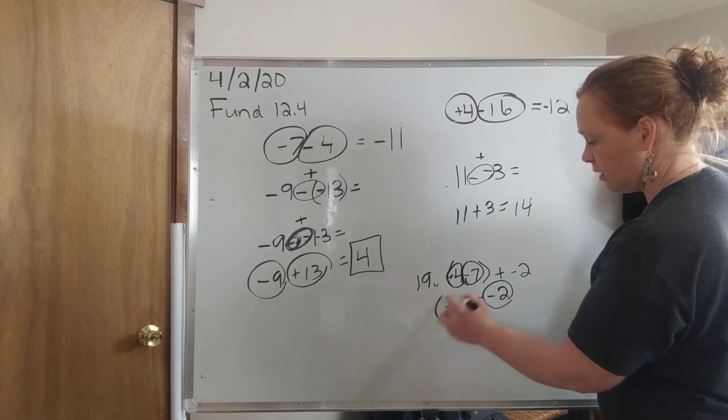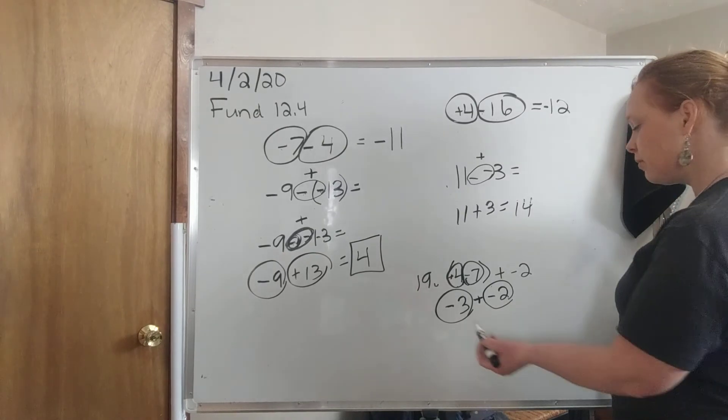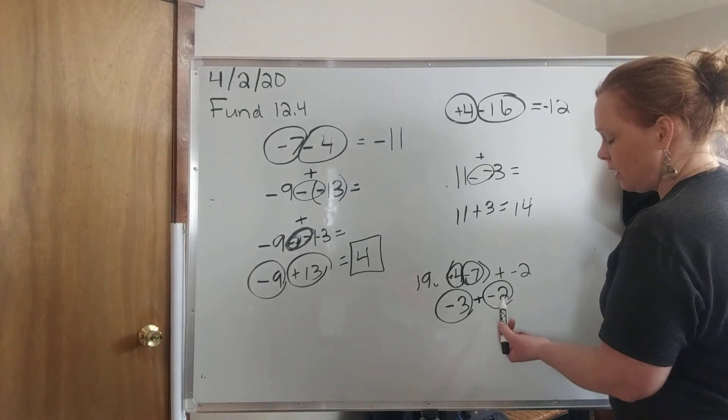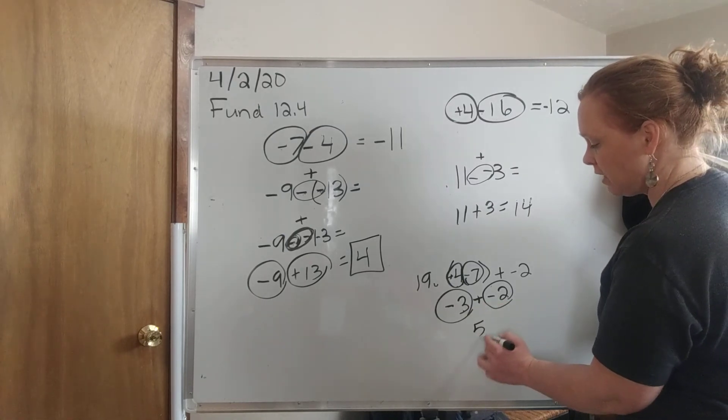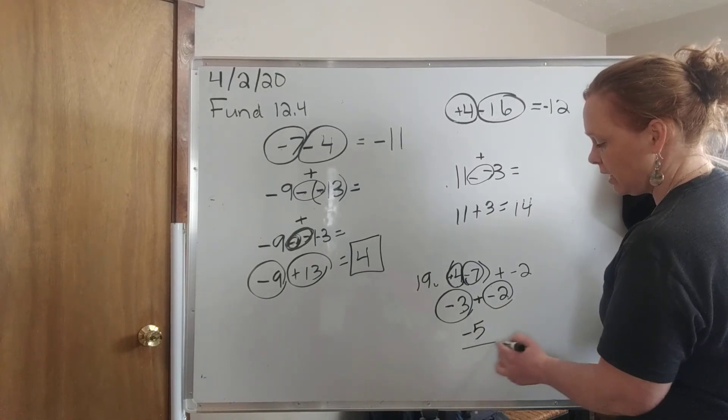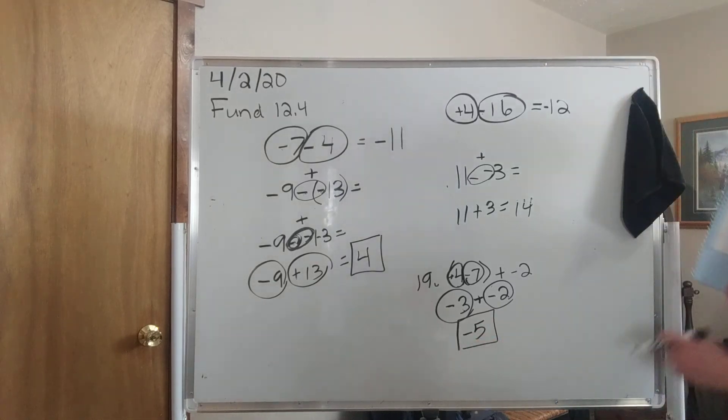So I can combine these two numbers. Negative 3 and negative 2, since they have the same sign, I'm going to add them. 3 plus 2 is 5 and I keep the sign. So my answer is negative 5.